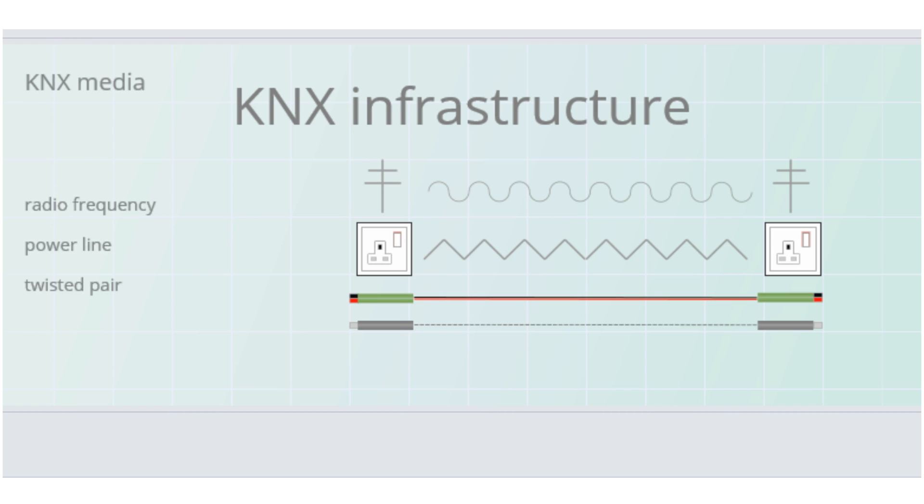And then there is twisted pair, a transfer over a standard KNX cable. Finally, there is internet protocol, IP, which is used as a medium to tunnel KNX messages.